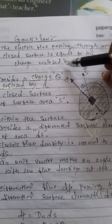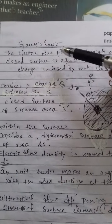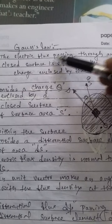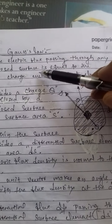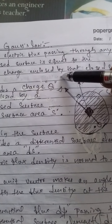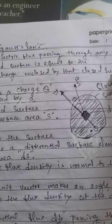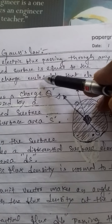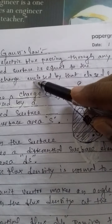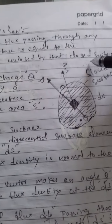Here we shall discuss Gauss's Law. The statement of Gauss's Law is: the electric flux passing through any closed surface is equal to the charge enclosed by that closed surface.